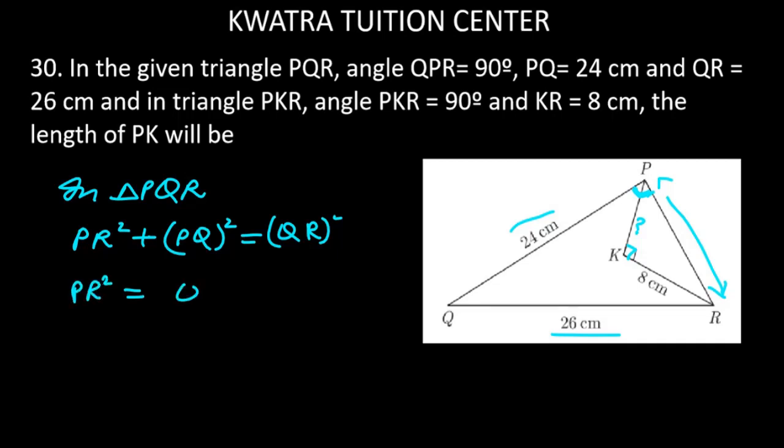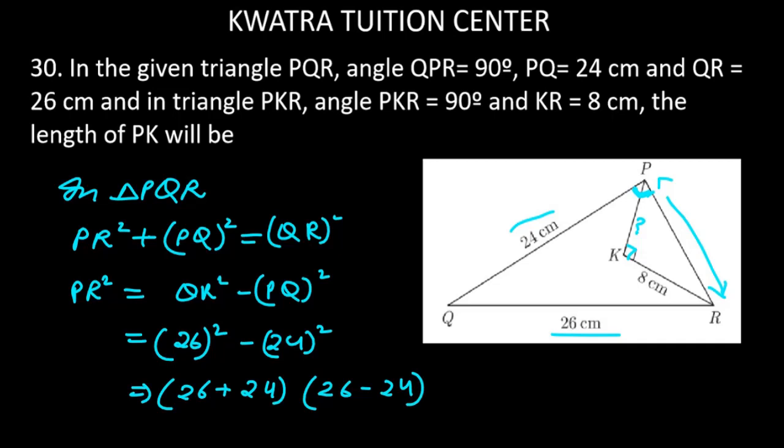So how can we write PR square? QR square minus PQ square. So your QR square will be 26 square minus 24 square. If you want to solve this easily, use the A square minus B square identity: 26 plus 24, 26 minus 24. So 26 plus 24 is 50, 26 minus 24 is 2. So you get the answer as 100. So the value of PR will be, we can write 100 in square form as 10 square. So our value of PR is 10.